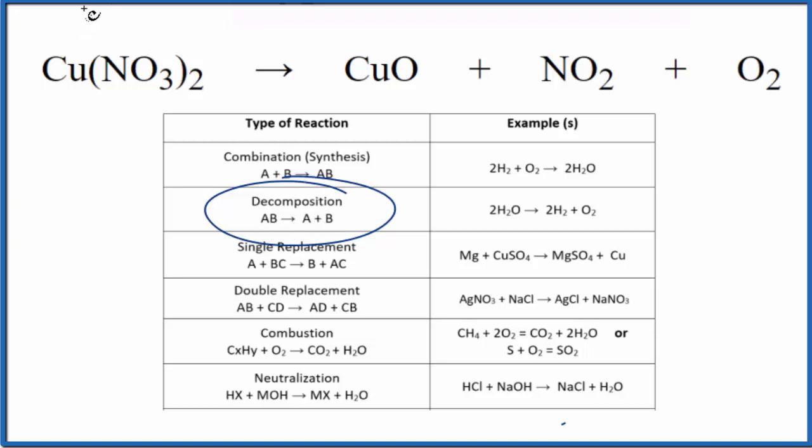So you could think of this as AB, but it's really breaking apart into three things, A plus B plus C. So I guess we could call it ABC. Either way, this substance is breaking apart into three new substances. That makes it a decomposition reaction.